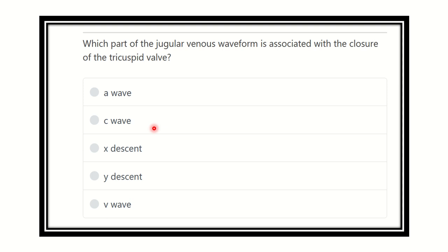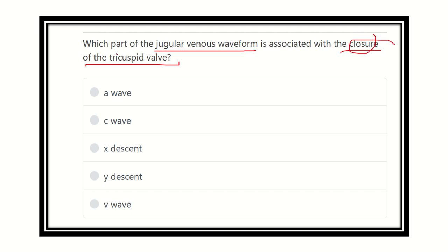Welcome to another question and answer session for the MRCS exam, this is the physiology portion. Which part of the jugular venous waveform is associated with closure of the tricuspid valve? The options are: a wave, c wave, x descent, y descent, and v wave.